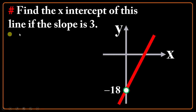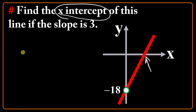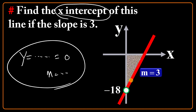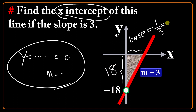Find the x-intercept of this line if the slope is 3. X-intercept means root. The general approach for the root is putting the equation equal to 0, but the problem is I don't know anything about the equation. So I establish a triangle, and this triangle will have slope 3, meaning height over base equals 3, so base will be one-third of the height. Height is 18, so one-third of 18 is 6. The root will be 6.